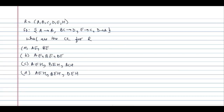The shortcut: look at the right-hand side of every functional dependency and identify attributes not present. B is present, D is present, C is present, A is present. That means E and H are not present on the right-hand side. Therefore any key not containing E and H can never be a candidate key — so we directly eliminate options A and B.